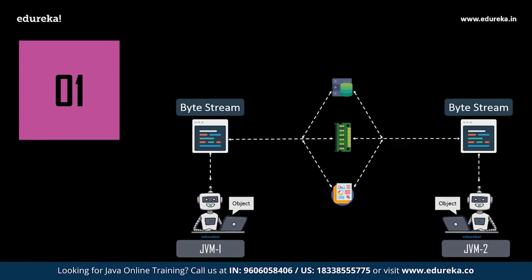We do have a compiler in Java. When a Java developer writes code, it is first decoded and converted into bytecode by the Java compiler. This bytecode is then transferred to the JVM — Java Virtual Machine — which is where the magic happens. Here the code is interpreted and the relevant output gets generated.